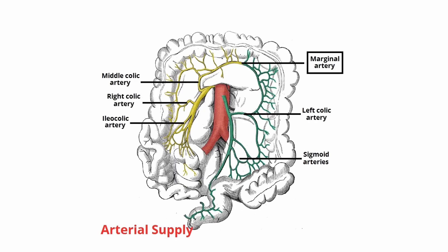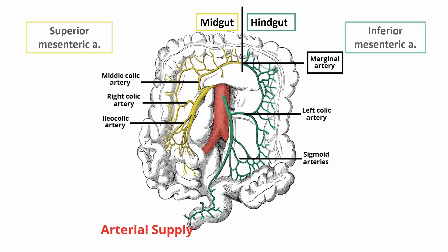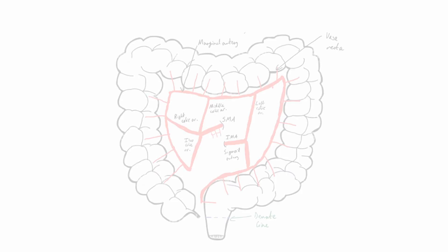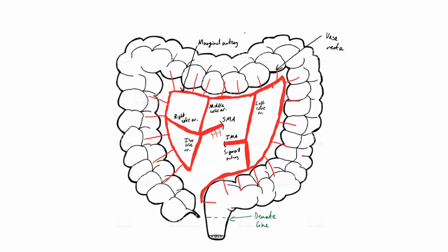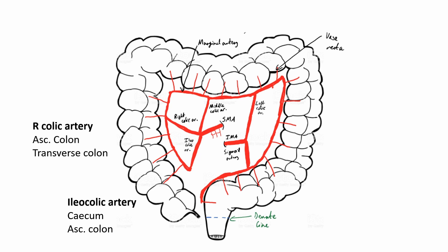The blood supply of the colon is determined by the embryological structures of the midgut and hindgut. The midgut goes from the sphincter of Oddi in the duodenum all the way to the proximal two-thirds of the transverse colon. The hindgut starts at the distal one-third of the transverse colon and goes all the way to the rectum. The two main arteries are the superior mesenteric artery for the right side of the colon and the inferior mesenteric artery for the left side. The superior mesenteric artery has branches: the ileocolic artery supplying the cecum and terminal ileum, the right colic artery supplying the ascending and transverse colon, and the middle colic artery supplying the transverse colon up to two-thirds.